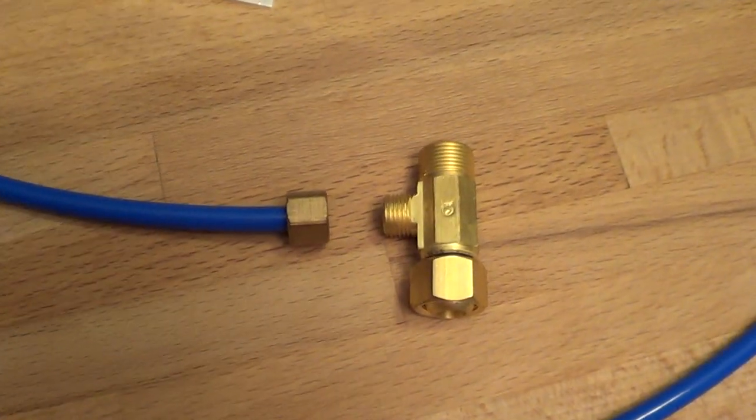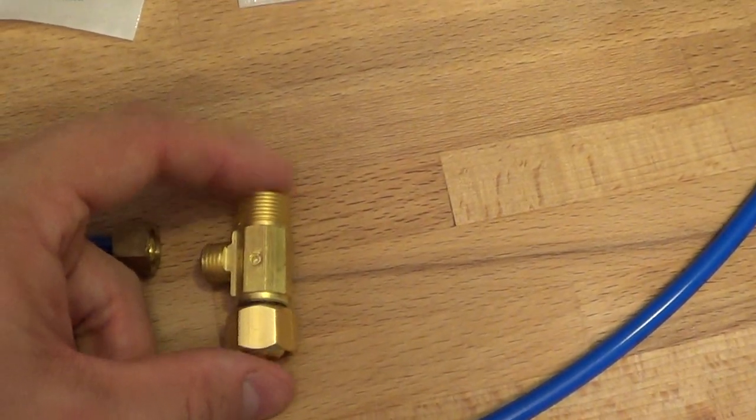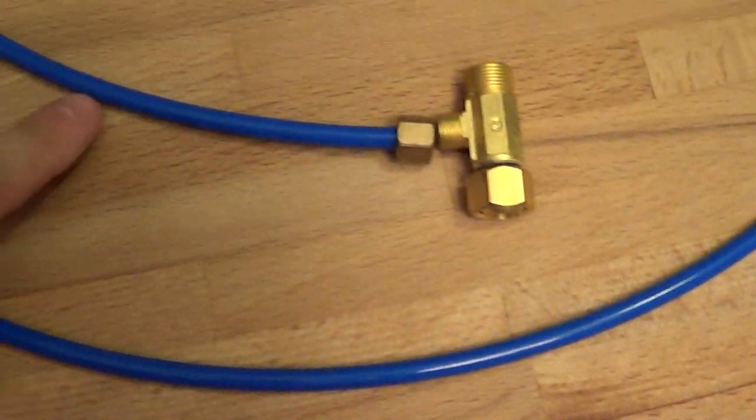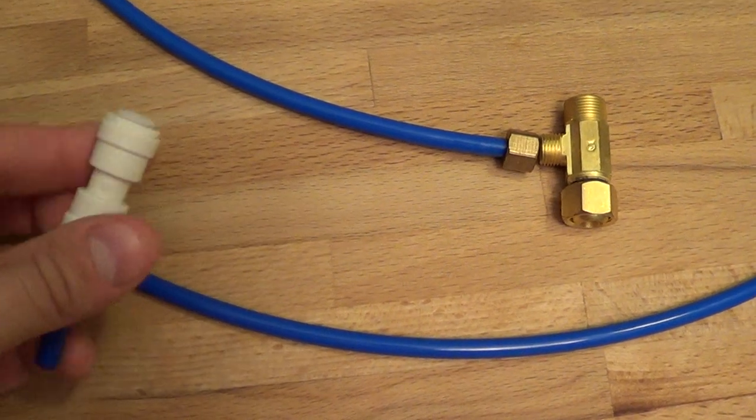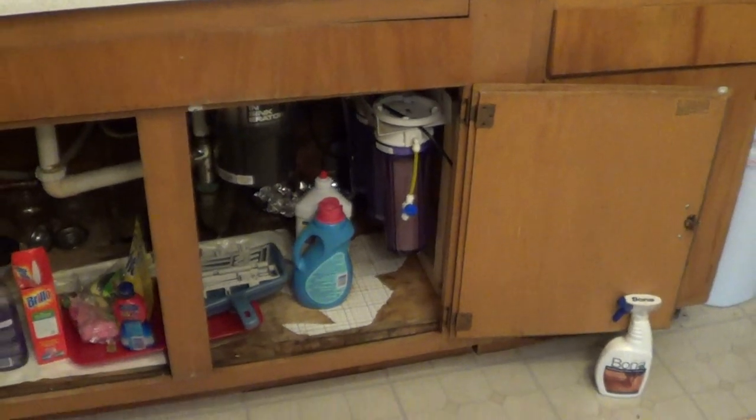So basically that's what you do. You unscrew your cold water line, and then you screw it back in with this in between. This is your T off to the side, and then again you use your quarter inch line connected to quick connect fittings, if you have need for them, connected to your three-stage carbon filter.